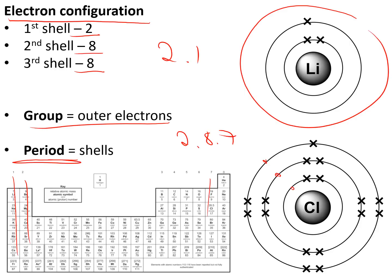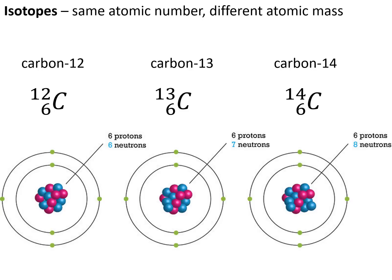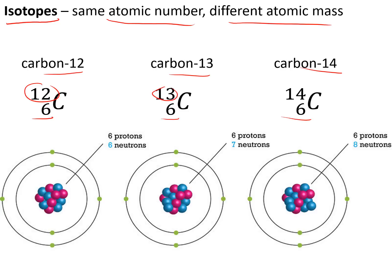The period number tells you the number of shells — lithium is in period 2 so it has 2 shells, chlorine is in period 3 so it has 3 shells. Isotopes are different versions of an element with the same atomic number but a different atomic mass — that is the same number of protons but different numbers of neutrons. Carbon has 3 isotopes: carbon-12, carbon-13, and carbon-14. They all have the same atomic number of 6 protons and 6 electrons, but 6, 7, and 8 neutrons respectively.